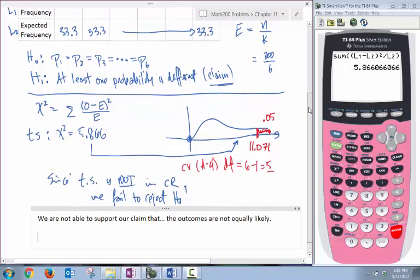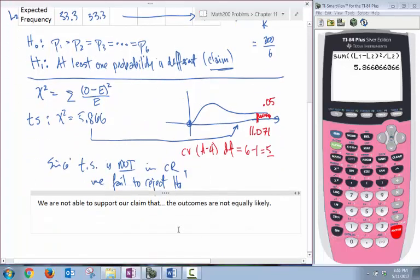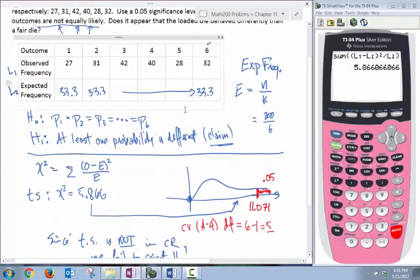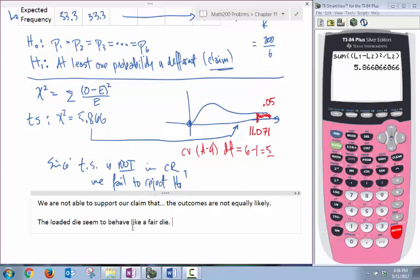Does it appear that the loaded die behaved differently? We were not able to support our claim, which means it was fairly equally likely. So it appears that the loaded die behaves pretty much like a fair die.